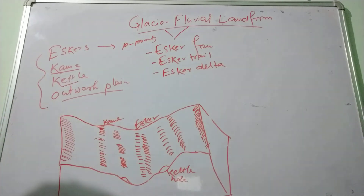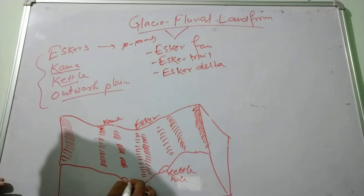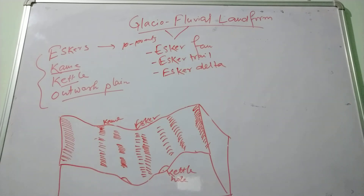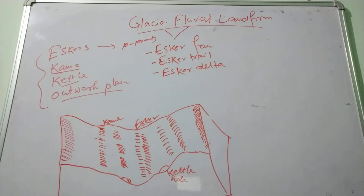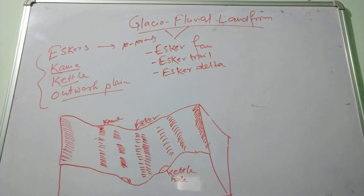And kettles — these are depressions found in the outwash plain, formed due to the melting of large ice blocks. These are the most important glacial-fluvial landforms found in glacial deterioration. Thank you for watching the video.